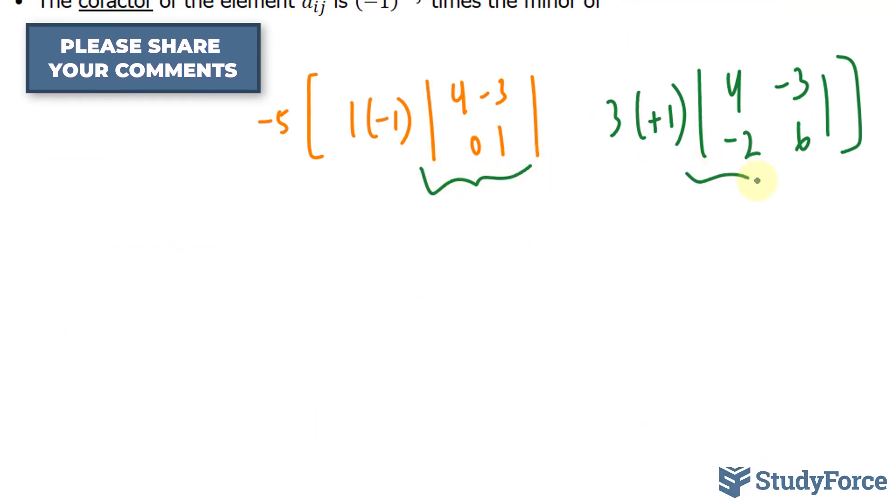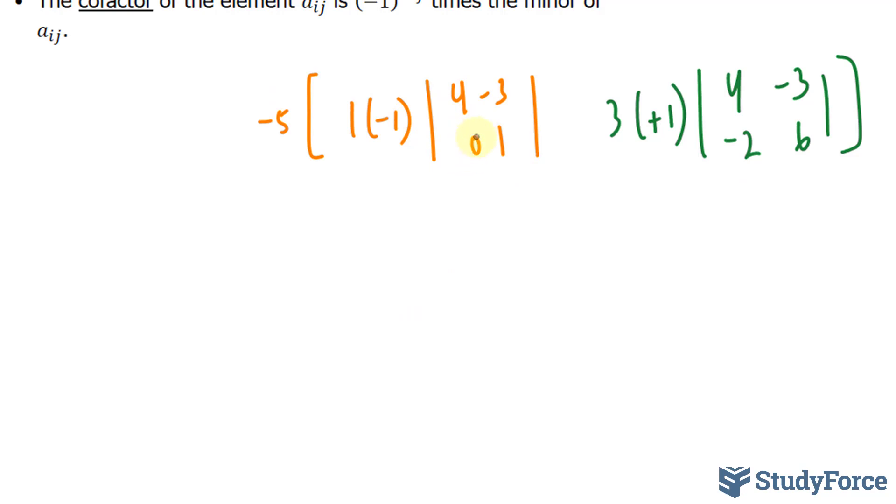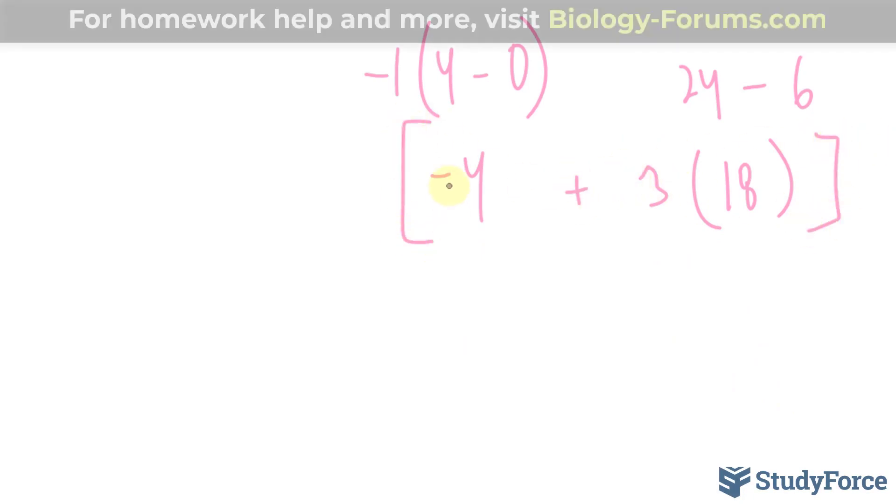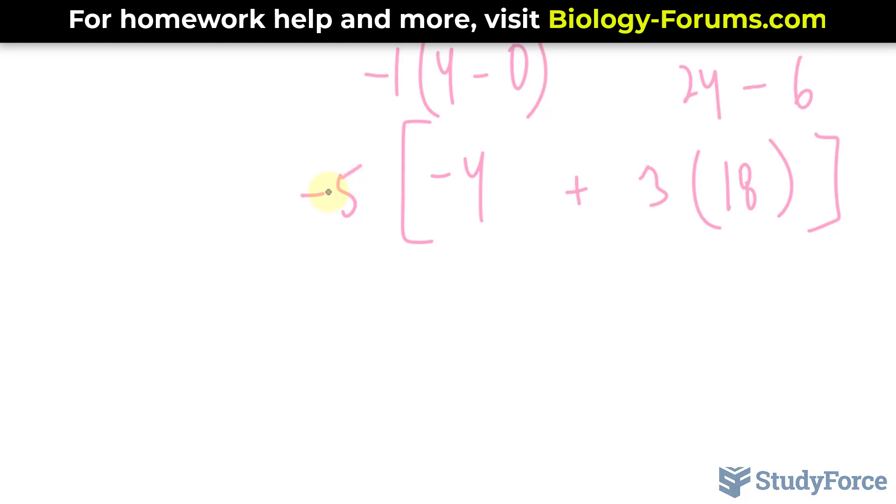The next step is to find the determinant of this one and this one. Starting with this matrix, we have 4 times 1 minus 0 times negative 3, that's 0. So we have negative 1 times 4, that's equal to negative 4. Over here, we have 4 times 6, that's 24, minus negative 2 times negative 3, that's positive 6. That gives us 18. We multiply that to 3. We will sum these up and multiply it to the factor of negative 5. Negative 4 plus 3 times 18 times negative 5 gives us negative 250.